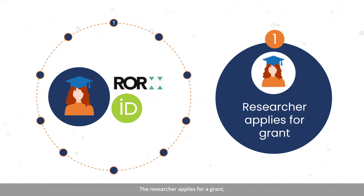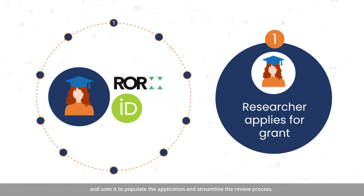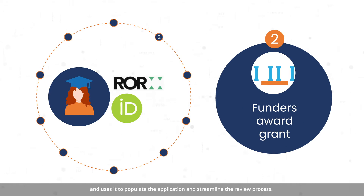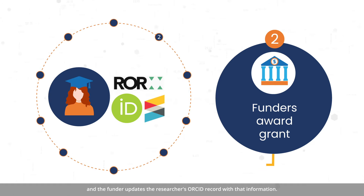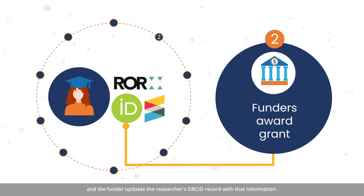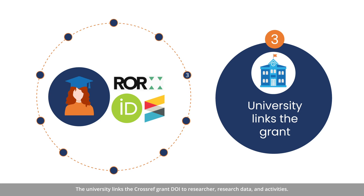The researcher applies for a grant, and the funder system pulls in that information from the ORCID record and uses it to populate the application and streamline the review process. The funder awards a grant and assigns it a unique Crossref DOI with metadata such as applicable OA policy, and the funder updates the researcher's ORCID record with that information. The university links the Crossref grant DOI to researcher, research data, and activities.